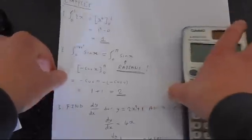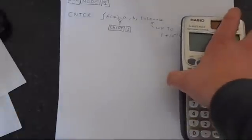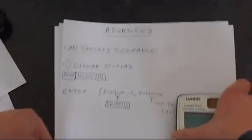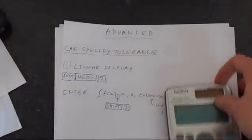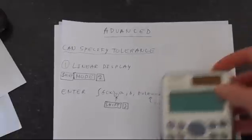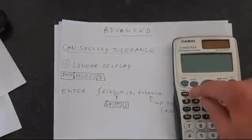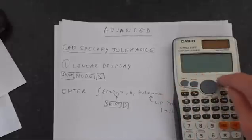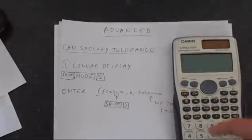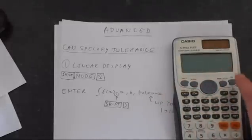The last thing we'll look at is just another way of doing this, slightly more advanced, which is to use the linear display. So to get into the linear display, you're pressing shift, mode, and then 2.